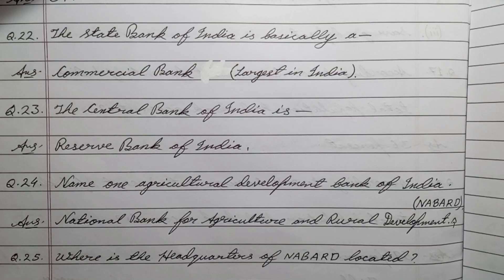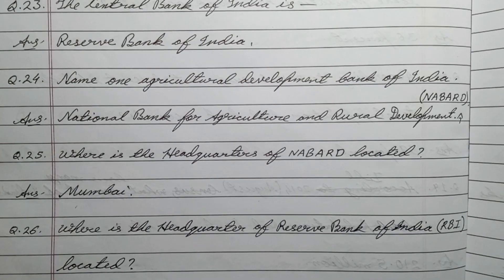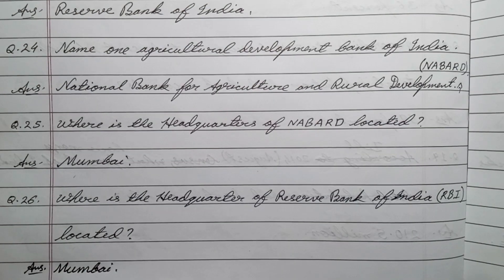Question number twenty-four: name one agricultural development bank of India. Answer: National Bank for Agriculture and Rural Development (NABARD). Question number twenty-five: where is the headquarters of NABARD located? Answer: Mumbai. Question number twenty-six: where is the headquarters of the Reserve Bank of India located? Answer: Mumbai.